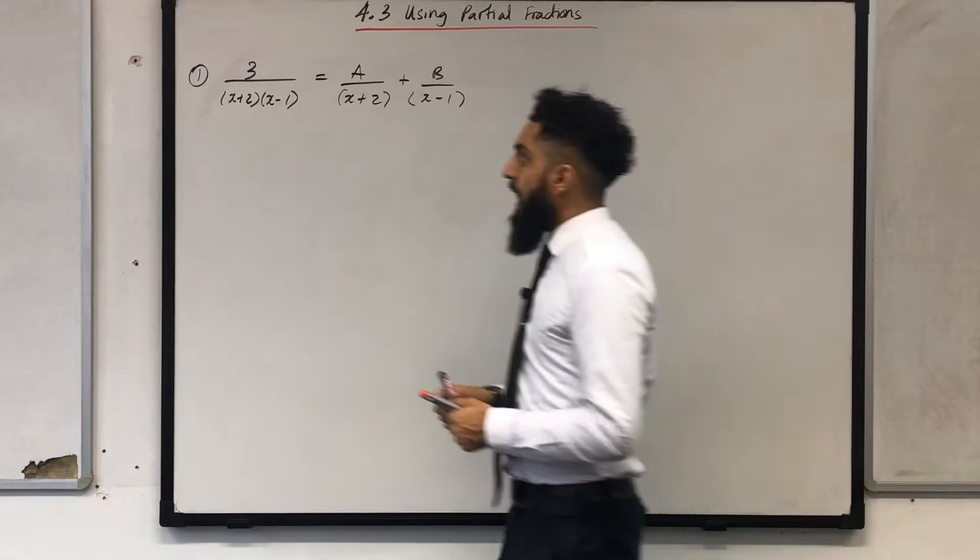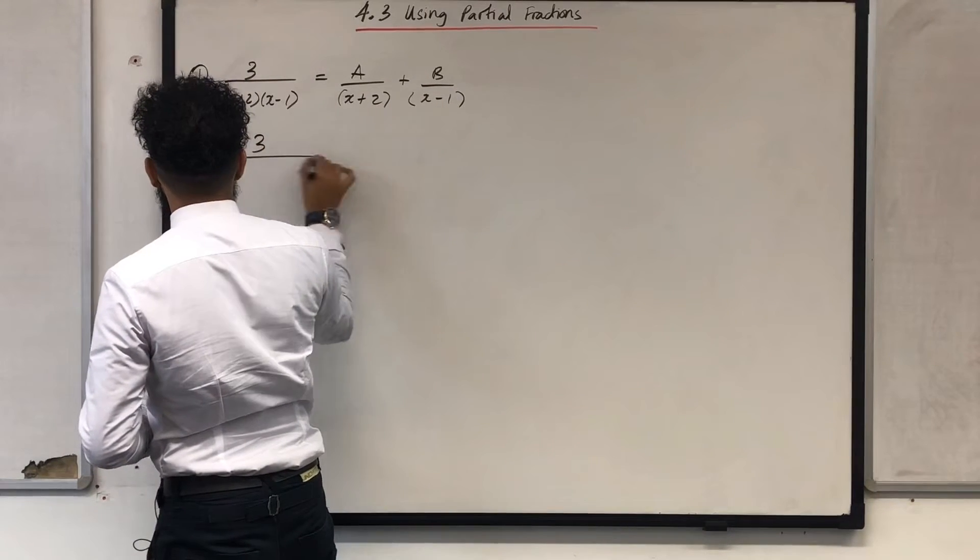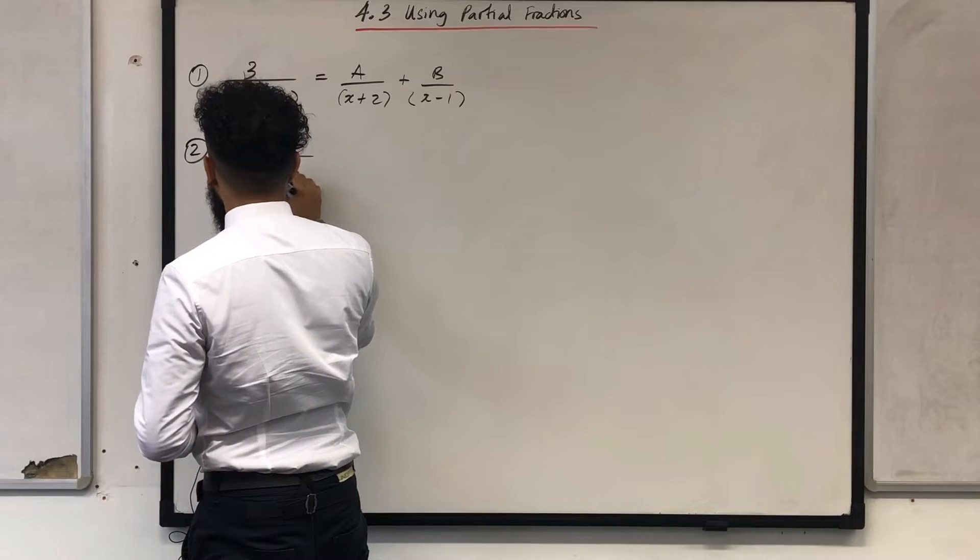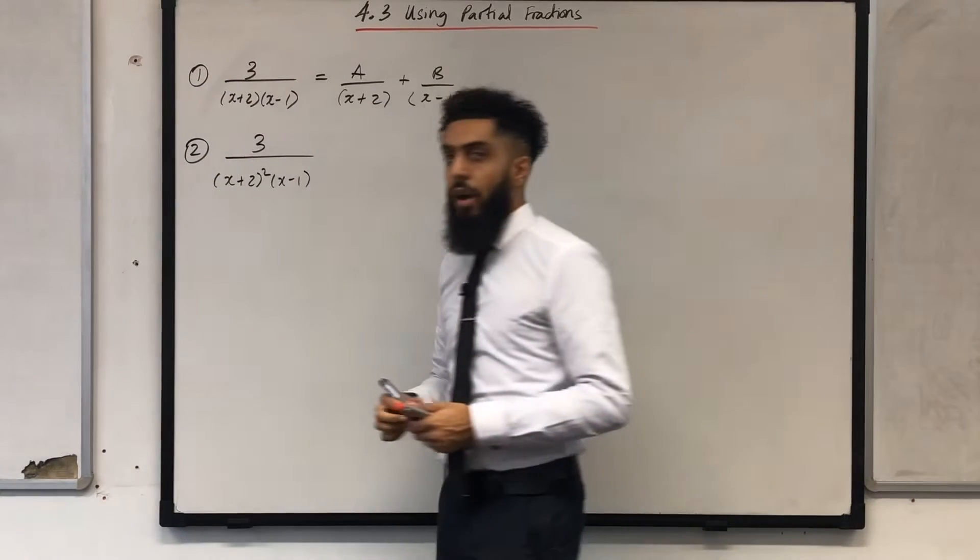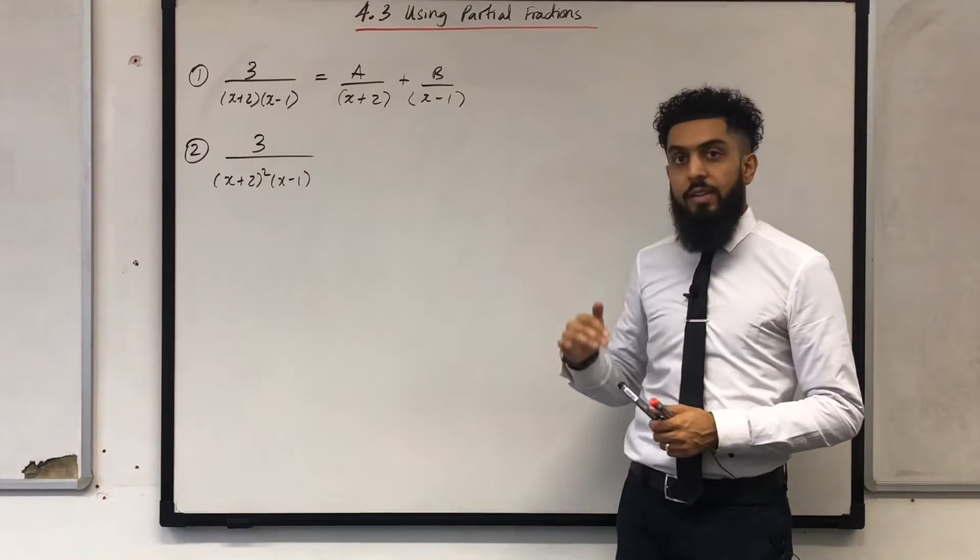The second form of fraction you could get in the exam could be of the following form: 3 over bracket x plus 2 squared bracket x minus 1. Over here we have a repeated factor and the repeated factor is x plus 2.